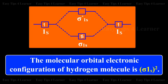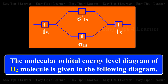The molecular orbital electronic configuration of hydrogen molecule is sigma 1s2. The molecular orbital energy level diagram of hydrogen molecule is given in the diagram.